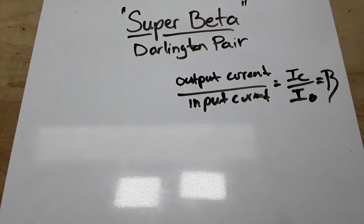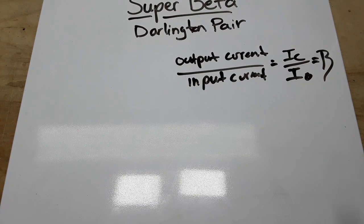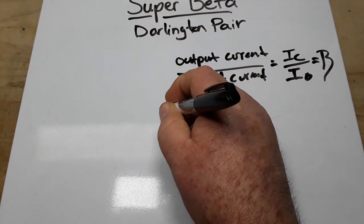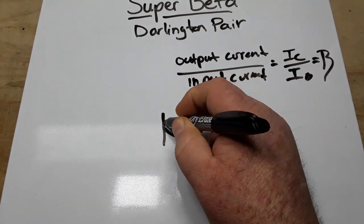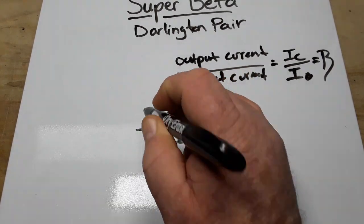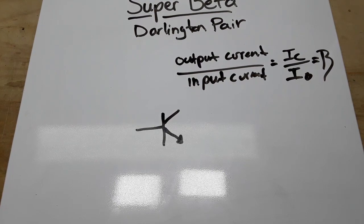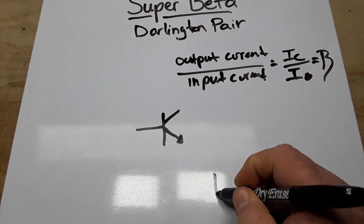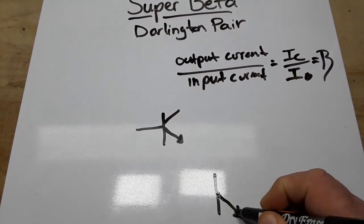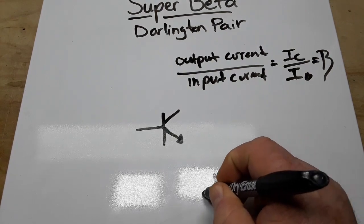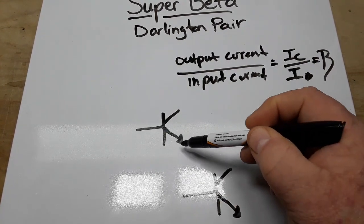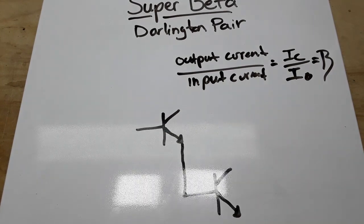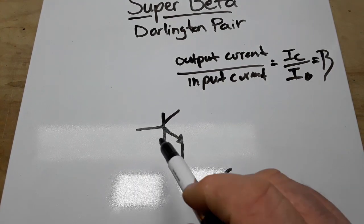Now a Darlington pair is when we take two transistors, in this case NPN transistors. Emitter, collector, and base. The second one: emitter, collector, and the base. And what we do is we connect the emitter of the first one to the base of the second one.